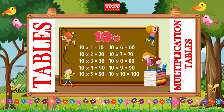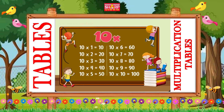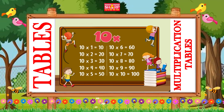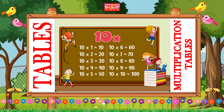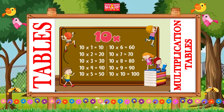Table of ten. Ten ones are ten, ten twos are twenty, ten threes are thirty, ten fours are forty.